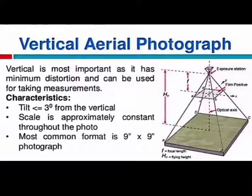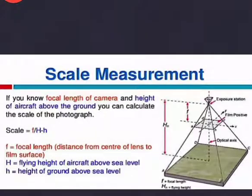Displacement is any shift in the position of a landscape feature on a photograph that does not alter the perspective characteristics of the image. Tilt or photographic relief comes under displacement, whereas lens distortion alters the perspective. Characteristics of a vertical photograph: tilt is less than three degrees from the vertical, scale is approximately constant throughout the photo, and the most common format is a 9-inch by 9-inch photograph.